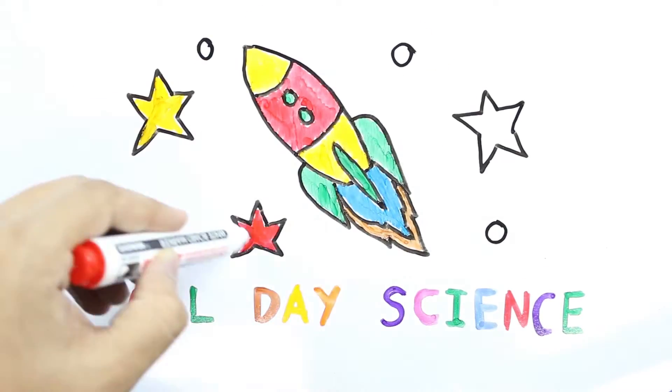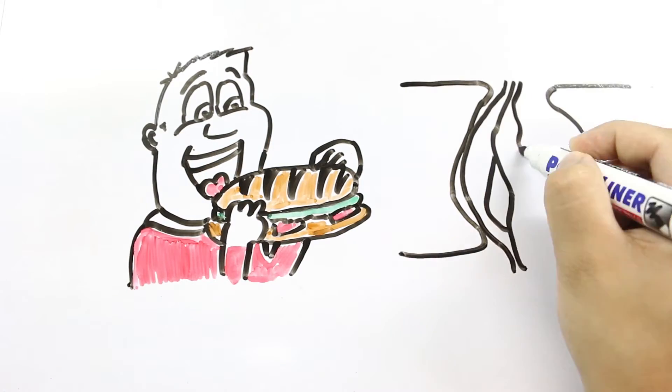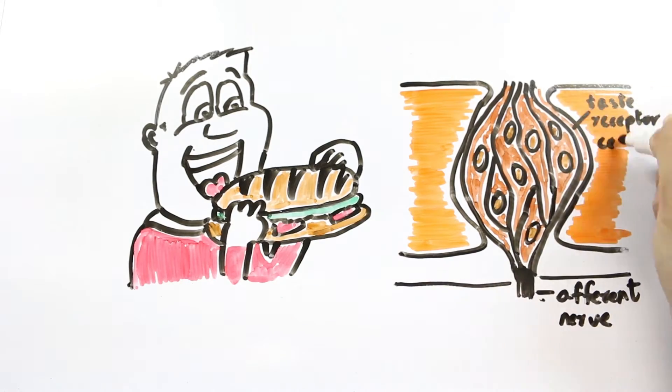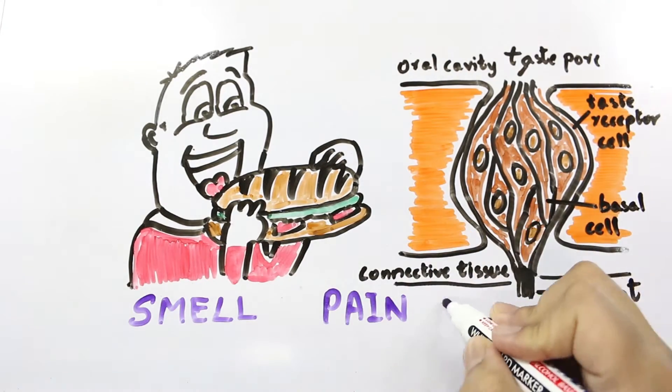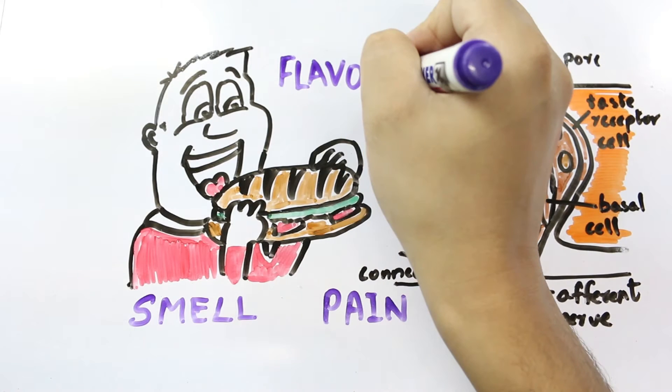Taste is the sensation produced when a substance in the mouth reacts chemically with taste receptor cells located on taste buds. Taste, along with smell and trigeminal nerve stimulation, determines flavors of foods or other substances.